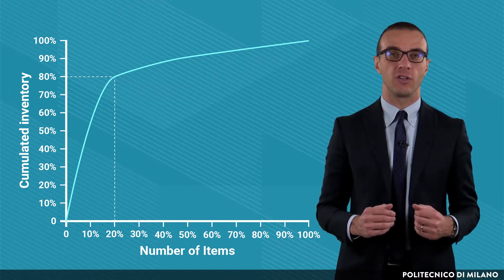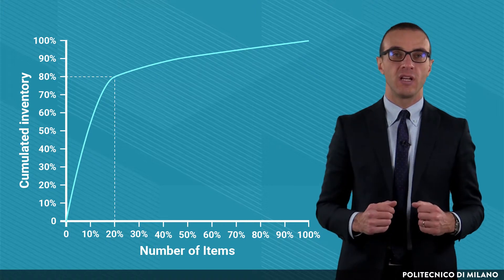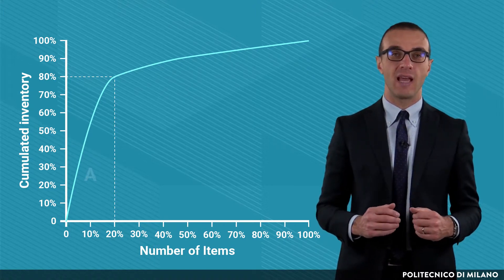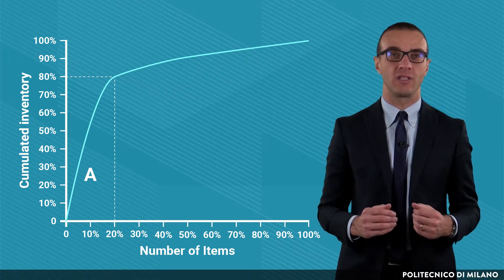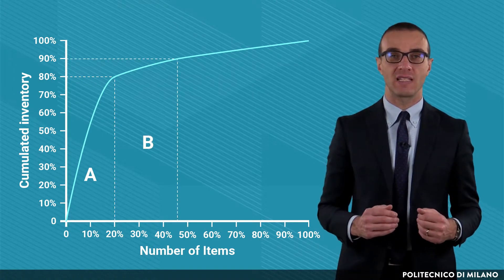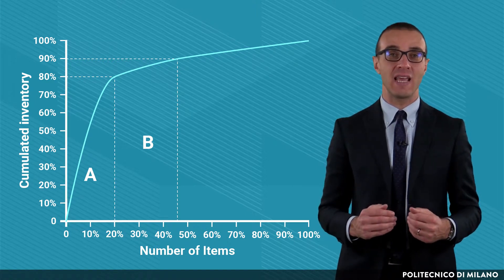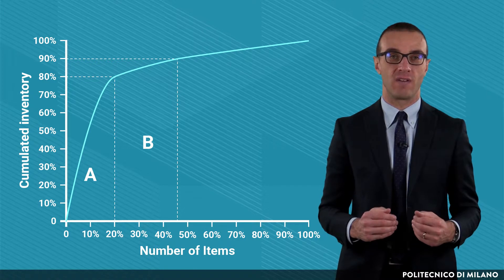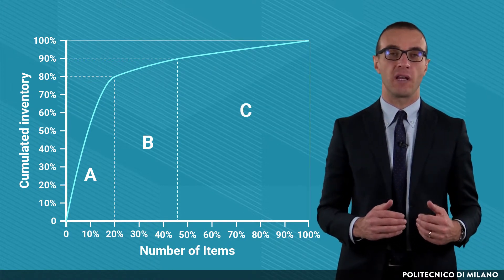From the analysis of the curve, three classes of items can be identified. A class items are those that determine about 80% of the value of the stock. B class items are those that, combined with the A class items, determine 90% of the value of the stock. C class items are the remaining ones.